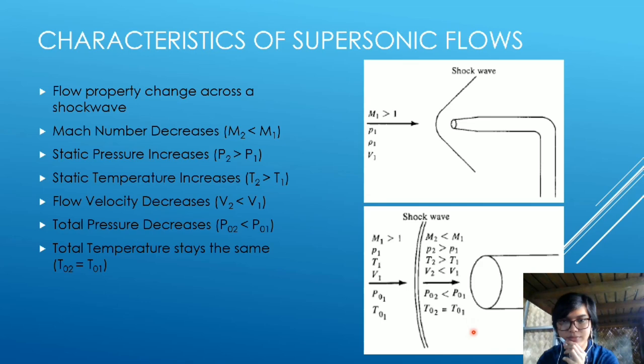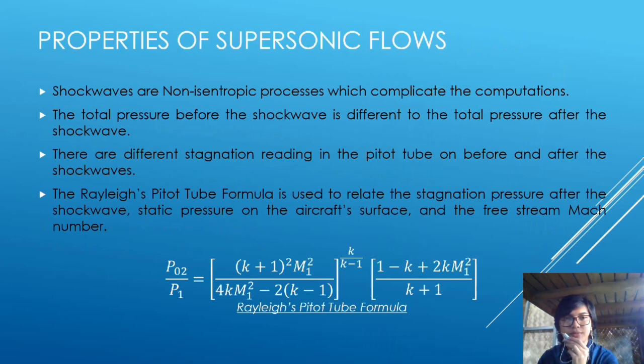Properties of supersonic flows: shock waves are non-isentropic processes which complicate the computation. The total pressure before the shock wave is different from the total pressure after the shock wave. There are different stagnation readings in the pitot tube before and after the shock waves. The Rayleigh pitot tube formula is used to relate the stagnation pressure after the shock wave, static pressure on the aircraft surface, and the free stream Mach number. And here is the Rayleigh pitot tube formula.